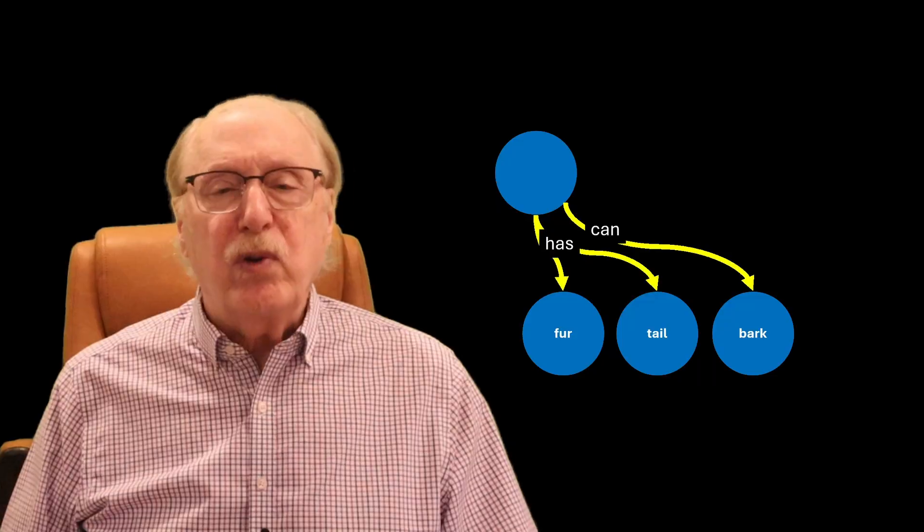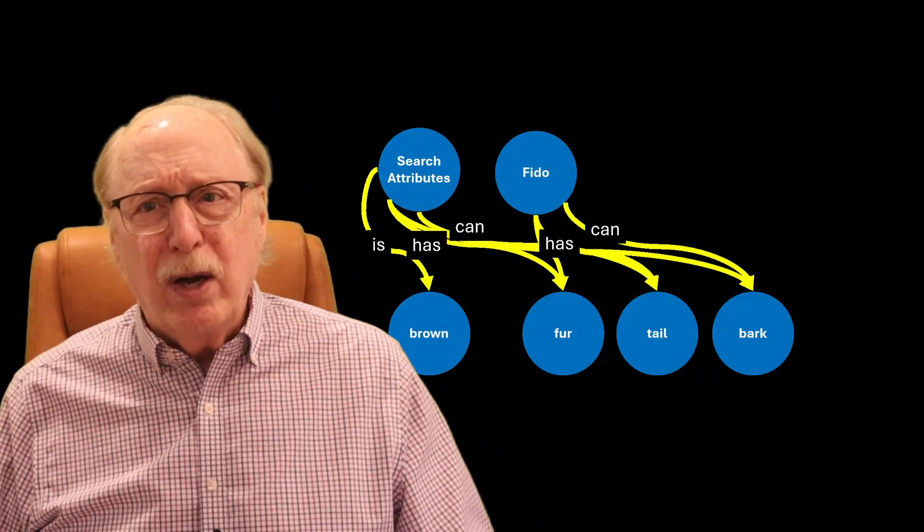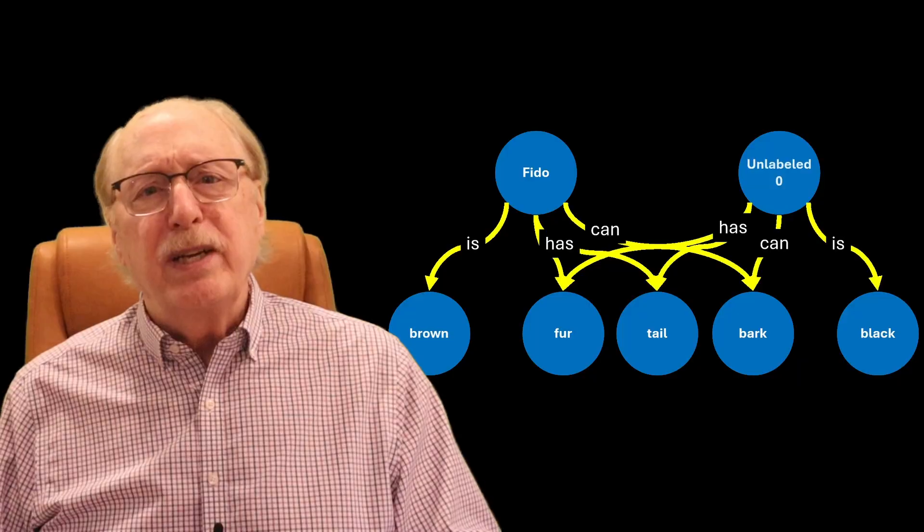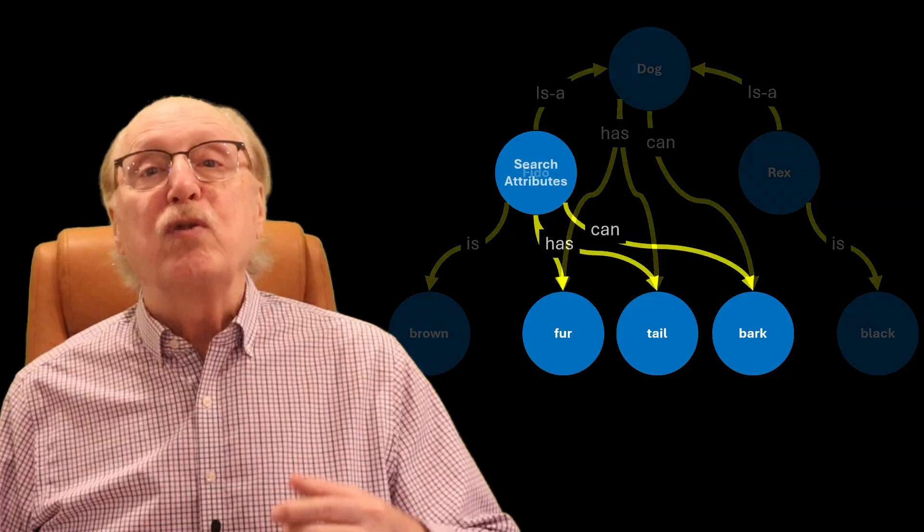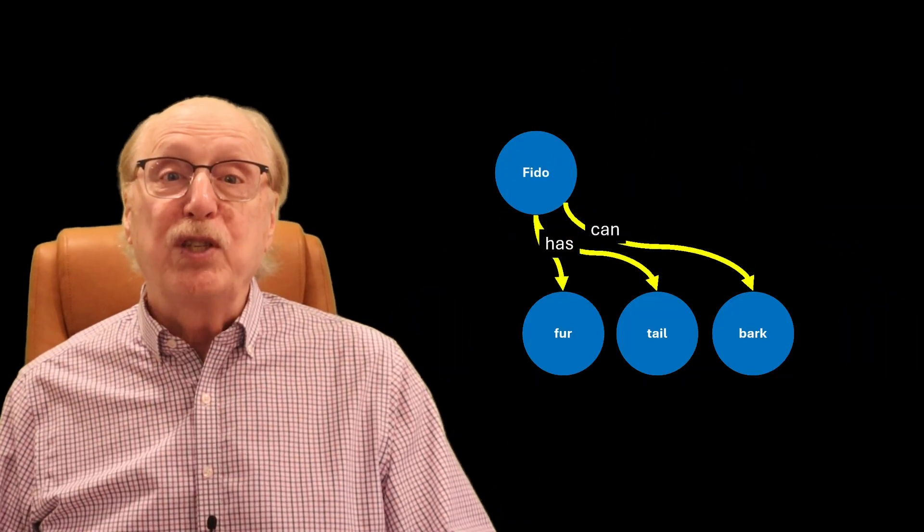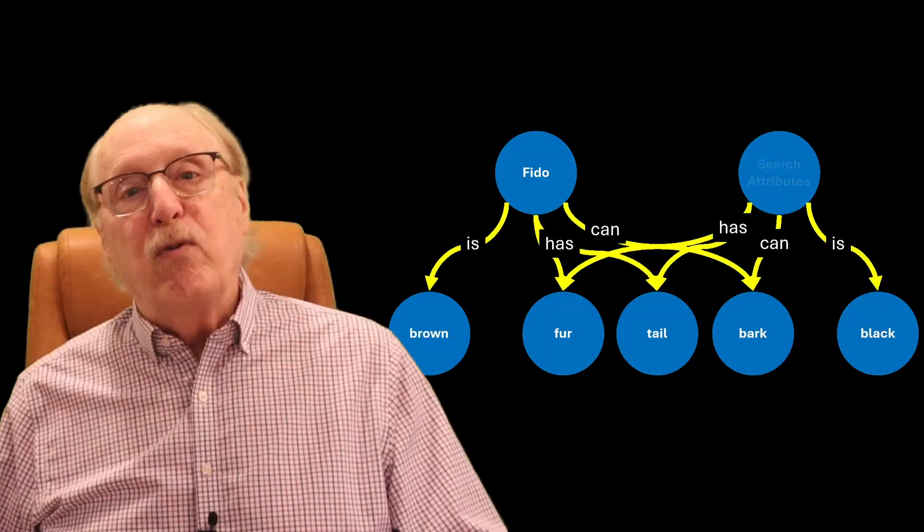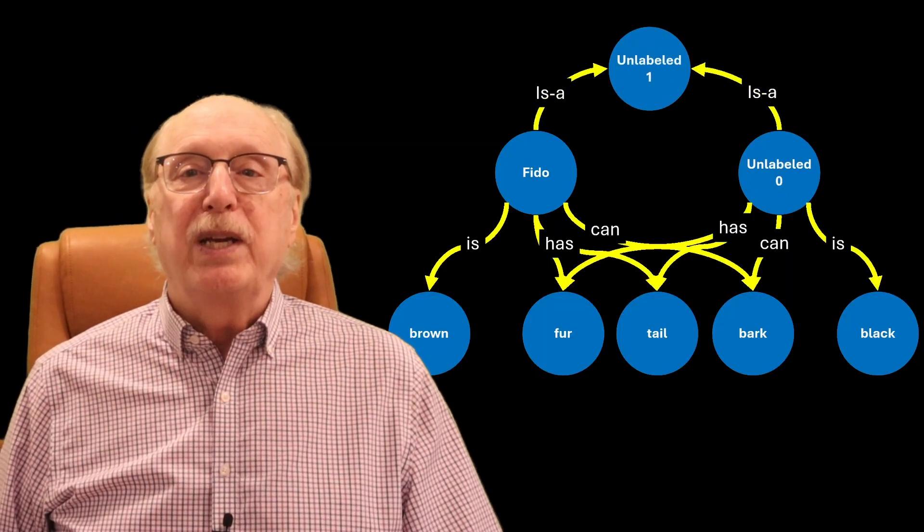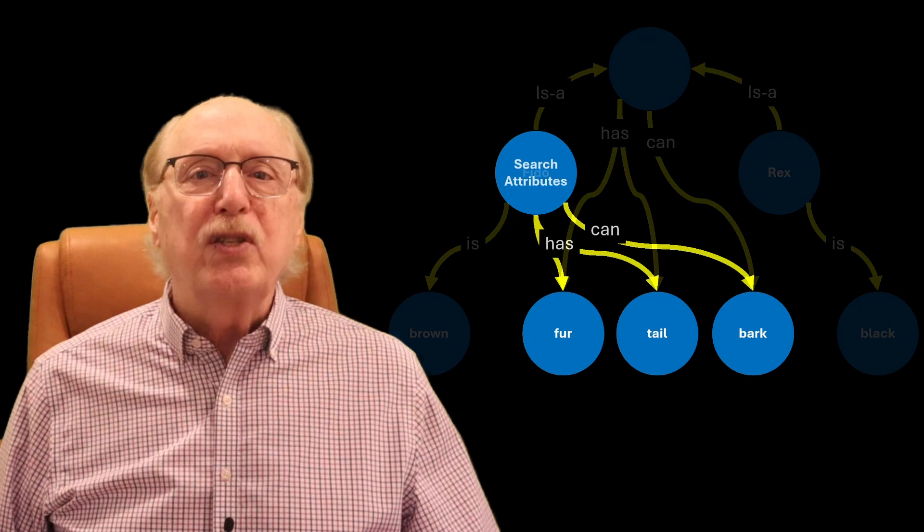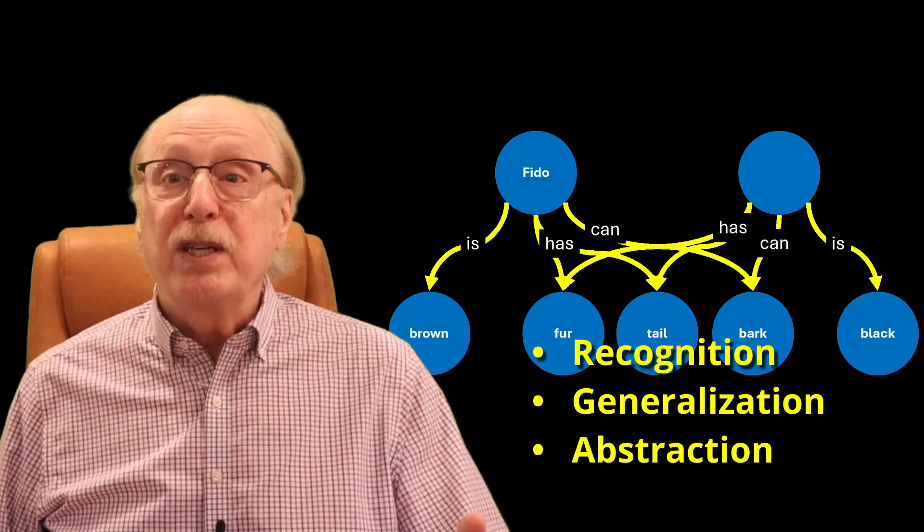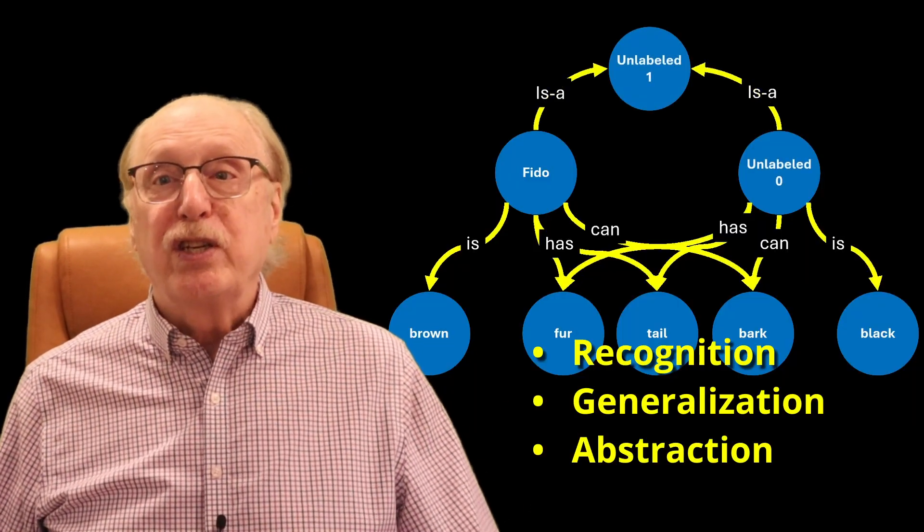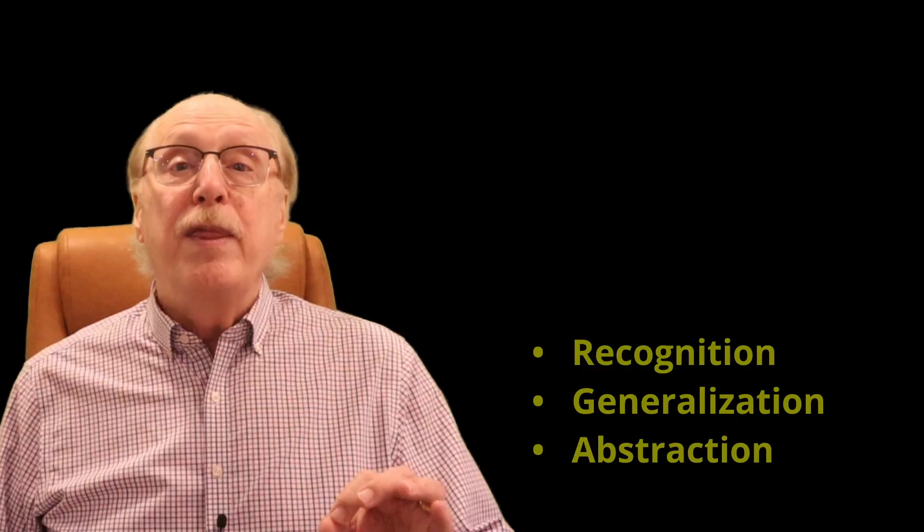This simple demonstration, leading to Fido is a dog, reveals the essential nature of learning. It's not memorization, not pattern fitting, and not statistical averaging. It is the continuous reorganization of relationships based on experience. The brain learns by forming and reshaping networks of meaning. Each yes and no adjusts the topology of understanding. Over time, the structure itself becomes the intelligence, capable of recognition, generalization, and abstraction. That, at its core, is how the brain learns and how the Brain Simulator 3 aims to replicate that process.